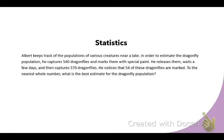Now we're going to jump over to statistics. Albert keeps track of populations. Remember when we did this the other day? It was the group jam where we set up proportions, and we just have to be comparing the same value on both sides of our ratios. He's keeping track of populations of various creatures near a lake. In order to estimate the dragonfly population, he captures 540 dragonflies and marks them with a special paint. I'm going to put the marked dragonflies in my numerator.